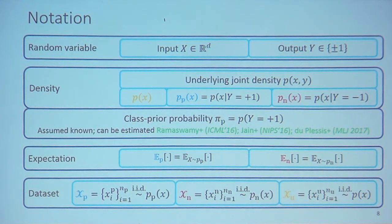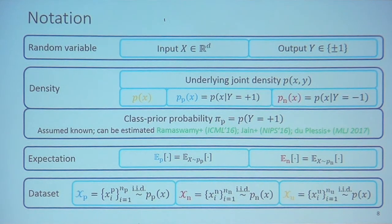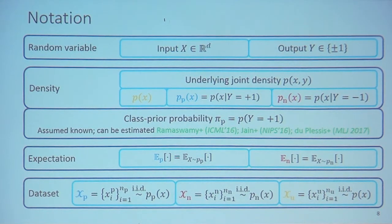In this work, we assume the class prior probability π is known to us. However, in PU learning and related problems, it can be easily estimated from the data — not for training, but for estimating the class prior. We define E_P and E_N as the expectations over the positive and negative class-conditional densities. We have three datasets: X_P and X_N are used in PN learning, and X_P and X_U are used in PU learning.